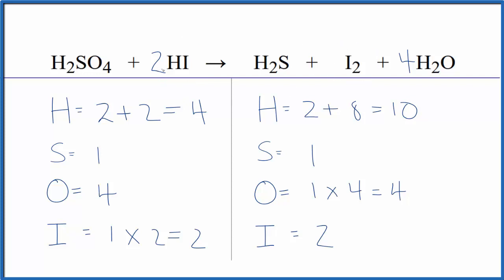So I think I'm going to put an eight in front of here. And I do that because I have two here. So two plus eight, that would equal 10. That would balance the hydrogen. So I'll put an eight here.